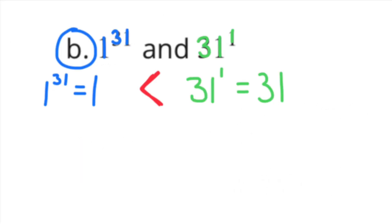Part b: 1 to the power of 31 and 31 to the power of 1. 1 to the power of 31 means 1 times itself 31 times — 1 times 1 times 1 and so on — which is still 1. And 31 to the power of 1 has a value of 31. So 31 to the power of 1 is greater than 1 to the power of 31.